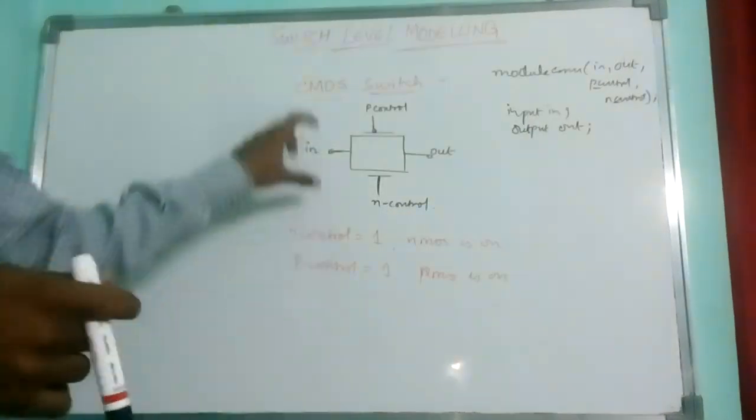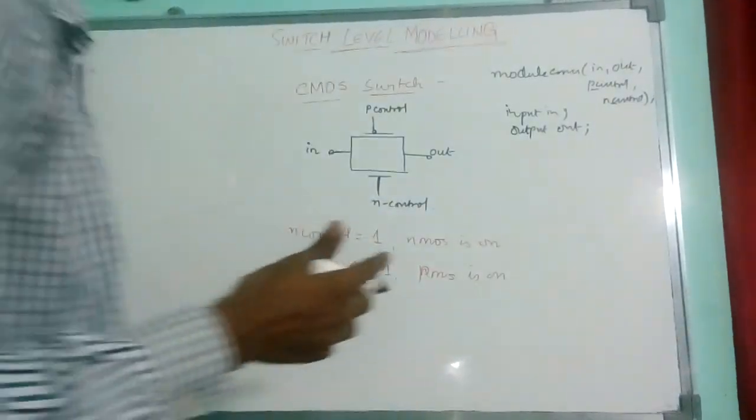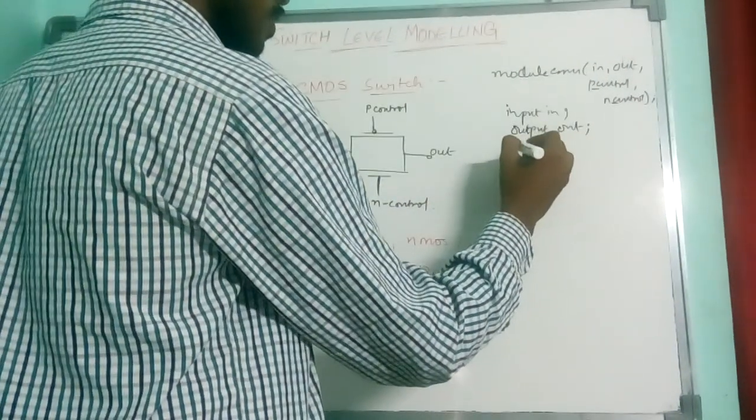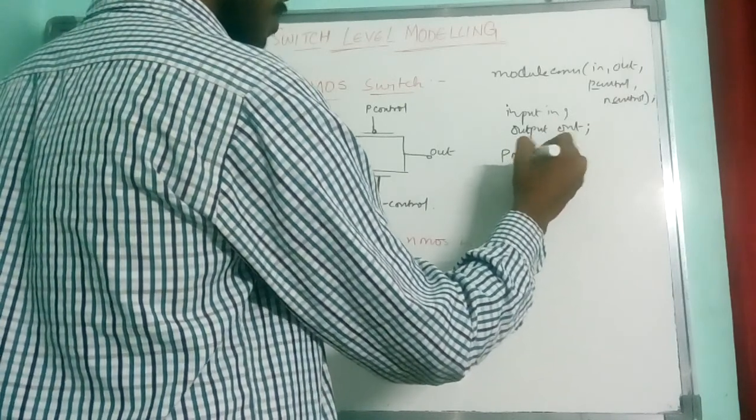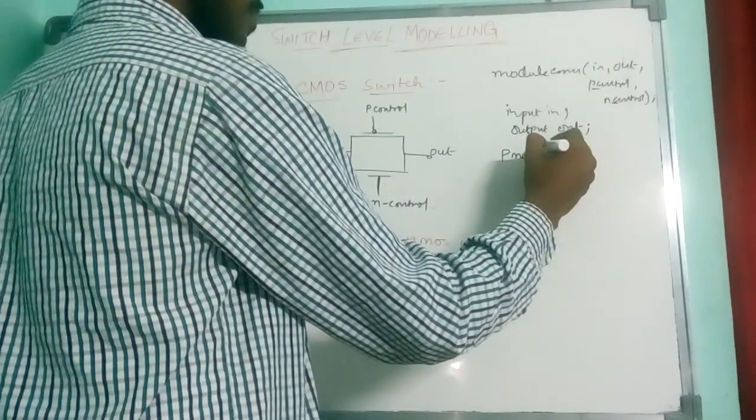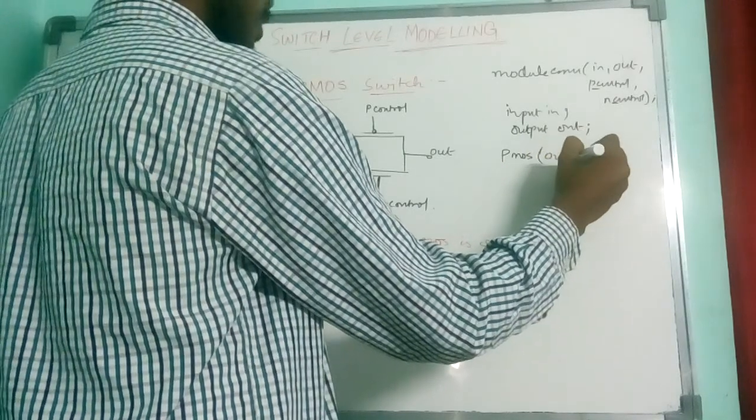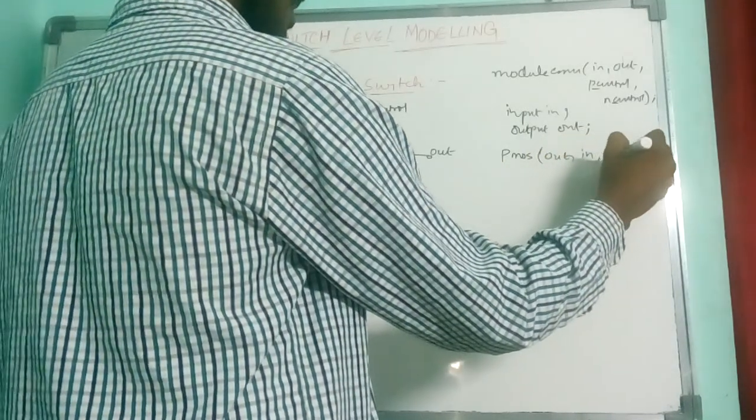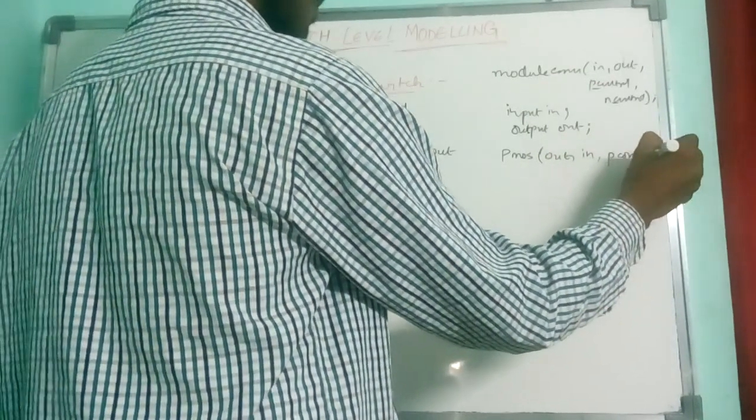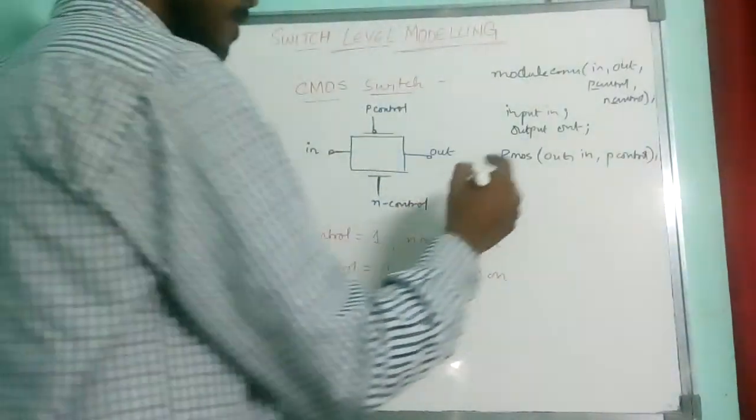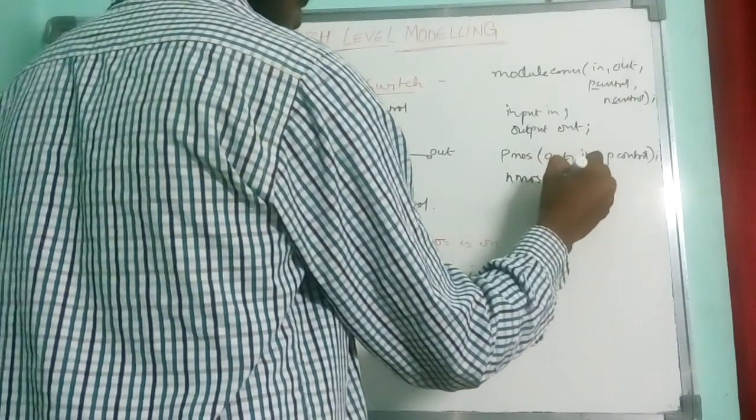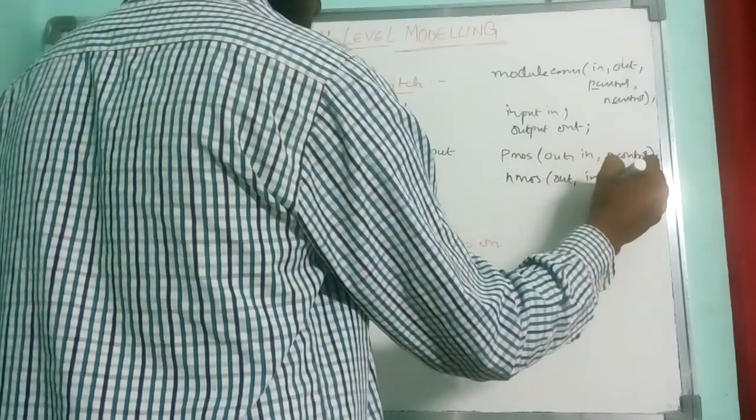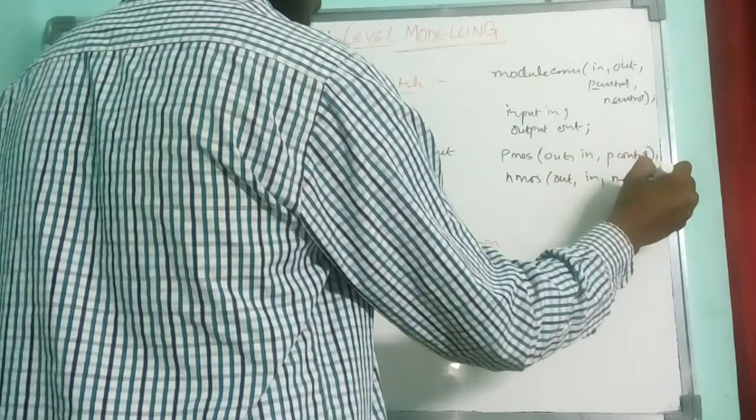We don't require any wire here. Supply and there is P control and N control, they are directly given. We need to write the PMOS and NMOS operations for this. PMOS: my output will be output, input will be IN, and P control is the control. Similarly, NMOS: output will be output, input will be input, and control will be N control.